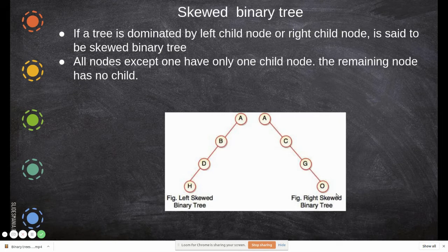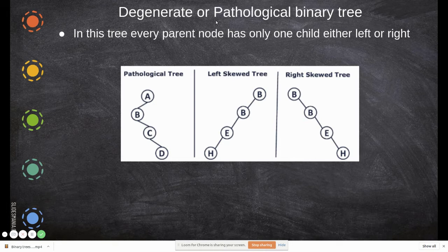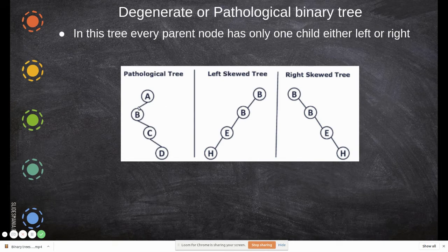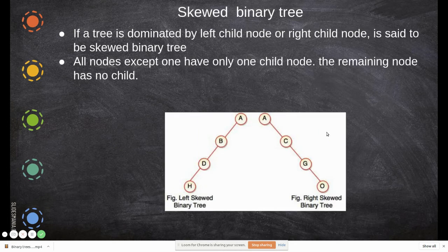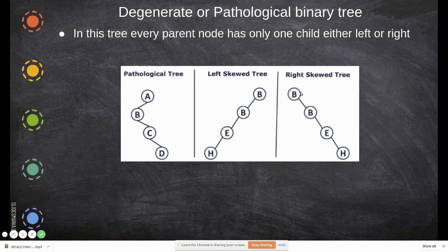Degenerate or pathological binary tree: in this type, every parent node has only one child, either a left or a right. So this is a pathological tree where some nodes have a left child and some have a right child. Both left-skewed and right-skewed trees also fall under pathological trees, but left-skewed means strictly left children and right-skewed means strictly right children.